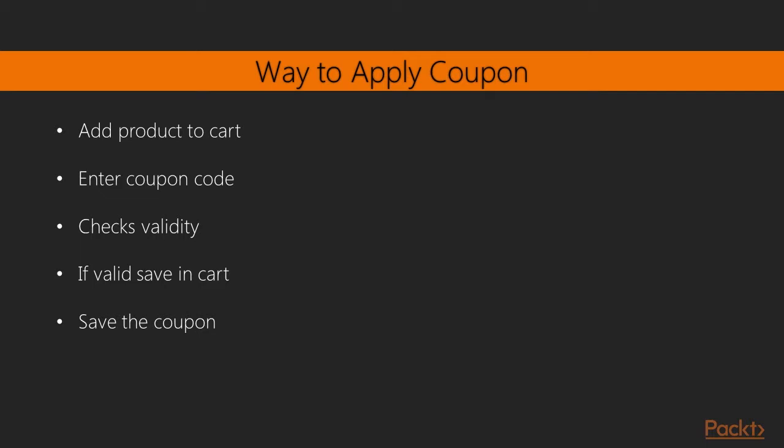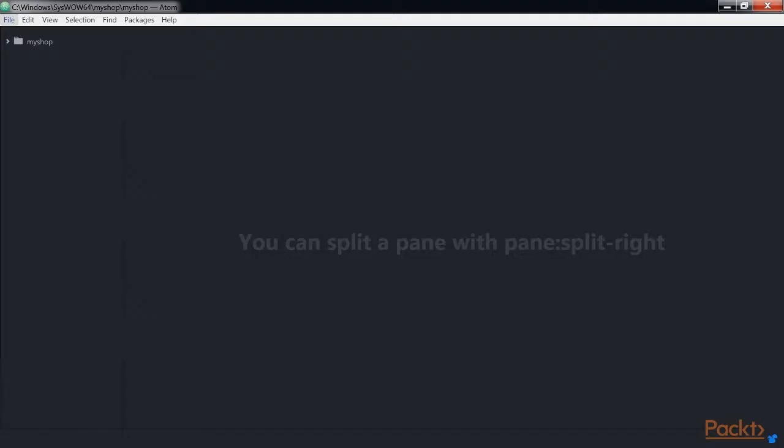After validating that, if a coupon is found, we save it in the user's session and display the cart including the discount applied to it and the updated total amount. Finally, when the user places the order, we save the coupon to the given order.